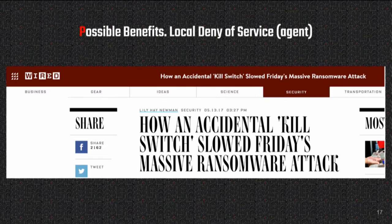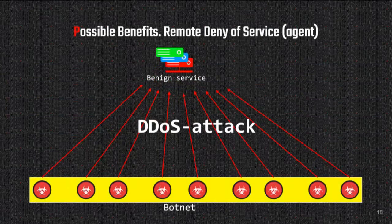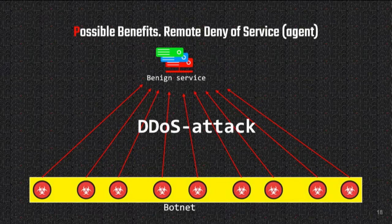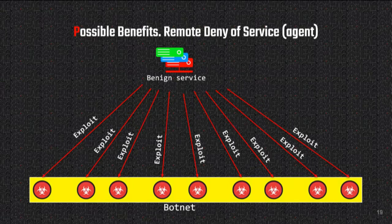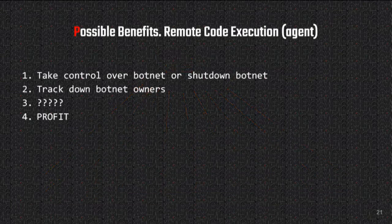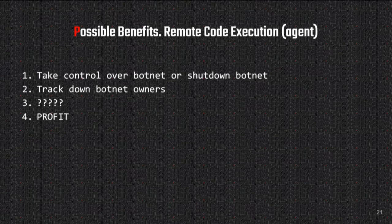If we can somehow trigger such a bug remotely, we would be able to do a lot of other cool things — like stop malware from spreading through our network, slow it down, or shut down existing agents, just by modifying network packets coming to and from CNC. It's especially useful against botnets trying to perform a DDoS attack against us. If the bots have a vulnerability in the victim's response parser, we just need to send our exploit back to the bots and it will cause a crash.